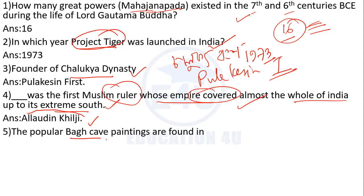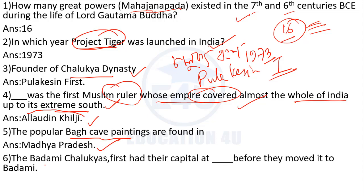Bagh cave paintings — where can these be found? The Badami Chalukyas first had their capital at Aihole before they moved it to Badami. So what was the capital of the Badami Chalukyas initially?